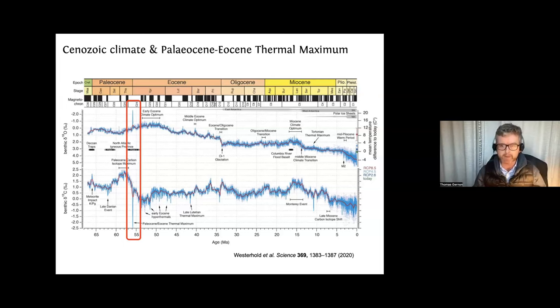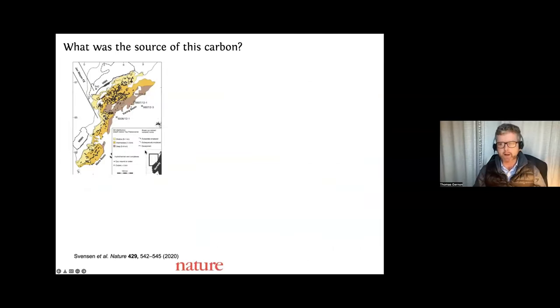How did this all happen is the next question. And there have been various proposals, going back to the classic paper by Henrik Svensson and his team, and they suggest that the carbon comes from mud rocks, which are effectively heated by the effects of magmatism at this time. So magmas are intruded into sedimentary mud rocks and heat them up, and that releases carbon. That actually releases a very light form of carbon, known as methane, which has a delta-13C signature of about minus 60, which is very light.